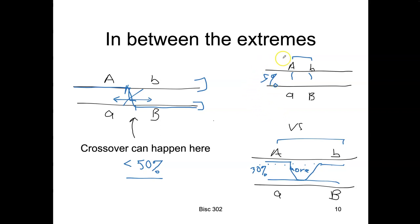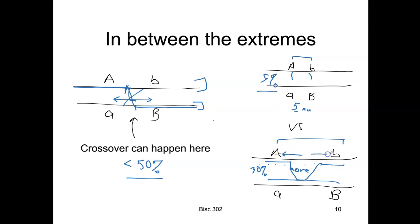If we do an experiment and find that there's 5% crossover, we say the genes are 5 map units apart. One map unit equals 1% crossing over. So think about how many map units apart genes would be if we observed 30% crossover — I'll leave you with that question.